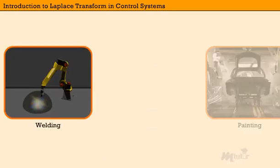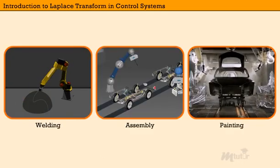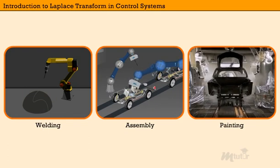In the manufacturing industry, tasks such as welding, painting, and assembly are carried out by robotic arms with high precision.